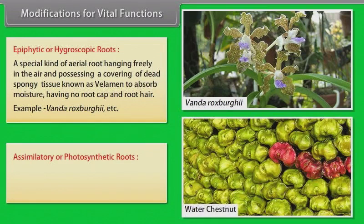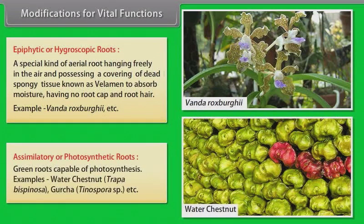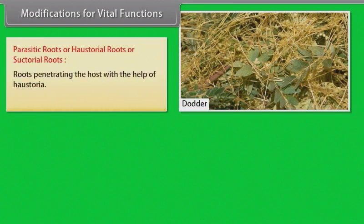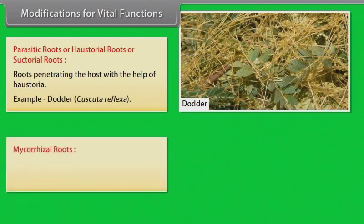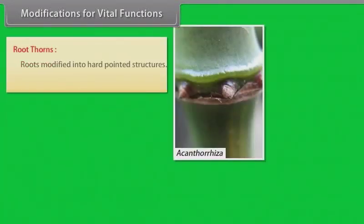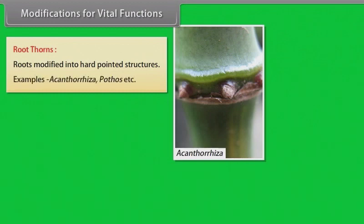Assimilatory or photosynthetic roots — green roots capable of photosynthesis. Example: water chestnut (Trapa), Tinospora. Parasitic or haustorial roots — roots penetrating the host with the help of haustoria. Example: Cuscuta. Mycorrhizal roots — roots associated with fungi. Examples: Chir pine, birch. Root thorns — roots modified into hard pointed structures. Examples: Acanthorrhiza, Pothos, etc.